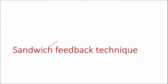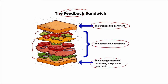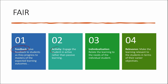Next is the sandwich feedback technique. When we provide feedback, there should always be a positive comment first, then the constructive feedback in the middle, and the closing statement should be reaffirming with a positive comment. What is the FAIR principles of effective learning? FAIR stands for Feedback — giving feedback to students as they progress to mastery of expected learning outcomes; Activity — engaging the student in active rather than passive learning; Individualization — relating learning to the needs of the individual student; and Relevance — making learning relevant to students in terms of their career objectives.